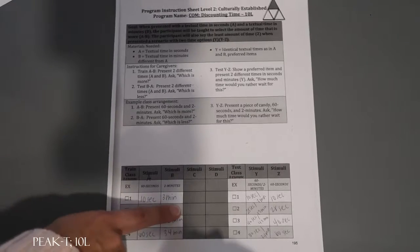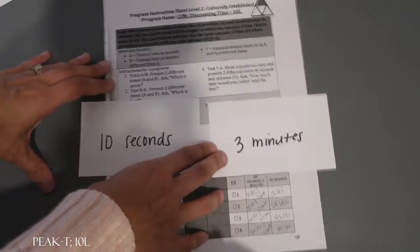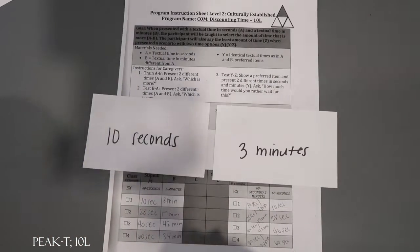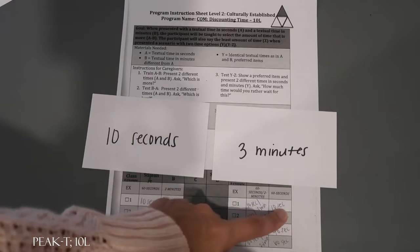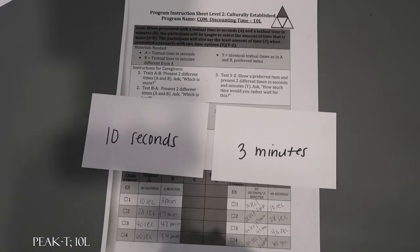So 10 seconds and 3 minutes is for train class 1. So you would have that preferred item out. And then you would ask them how much time would you rather wait for this. This would be the correct answer that's written on the program instruction sheet.